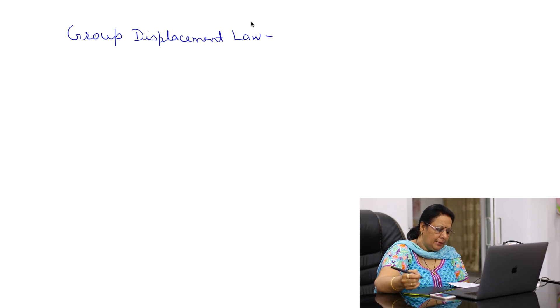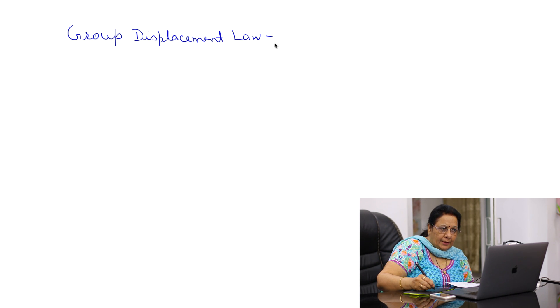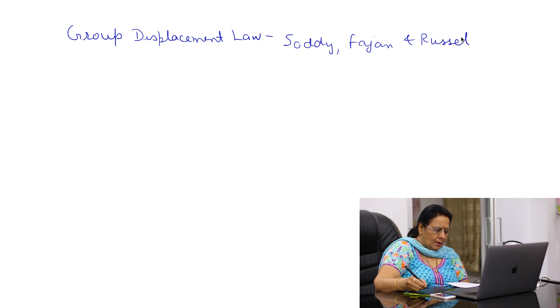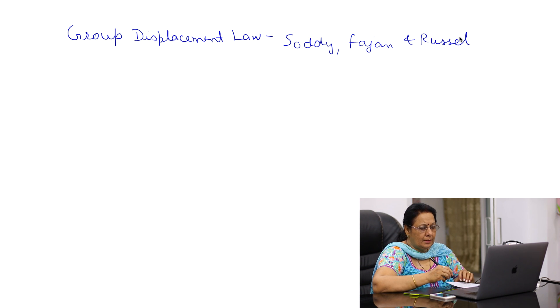Welcome to chemistryonline.guru. Today we will discuss the Group Displacement Law. To determine the position of a new element formed after the emission of alpha and beta particles, Soddy-Fajans and Russell gave a law, which is known as the Group Displacement Law.